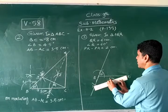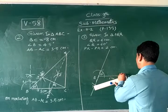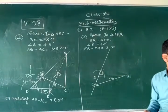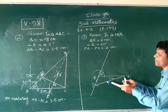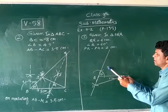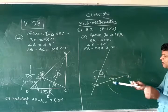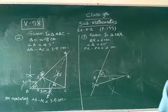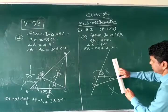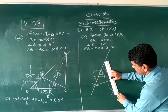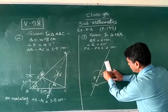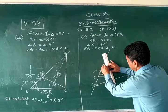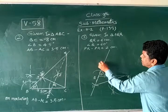Now draw the perpendicular bisector of RS. We take at R more than half of the RS, cut above and below R. Similarly with center S. Till this step everybody understand? Yes sir. Now we have to join these two intersecting points. And this point is known as P.